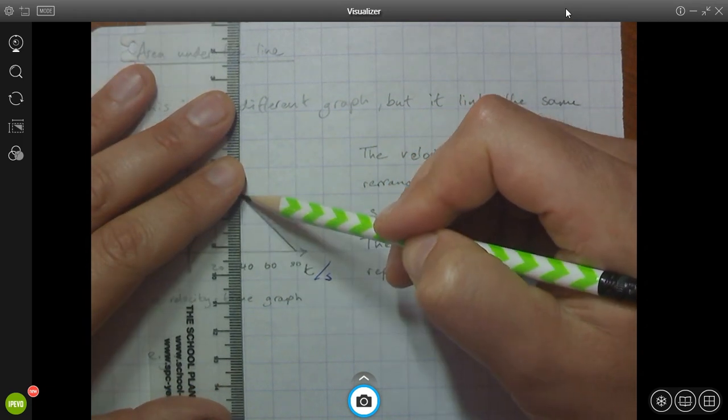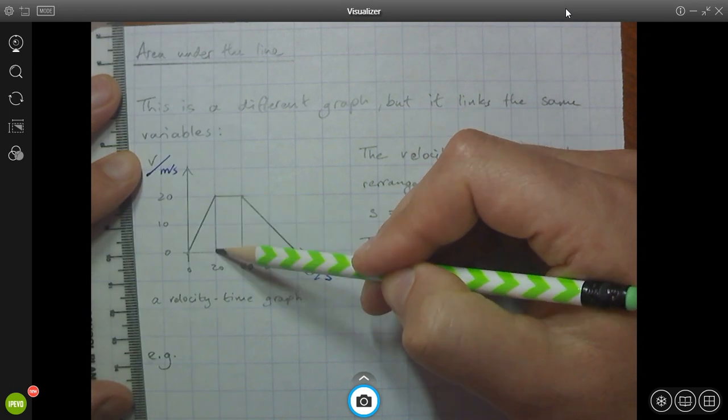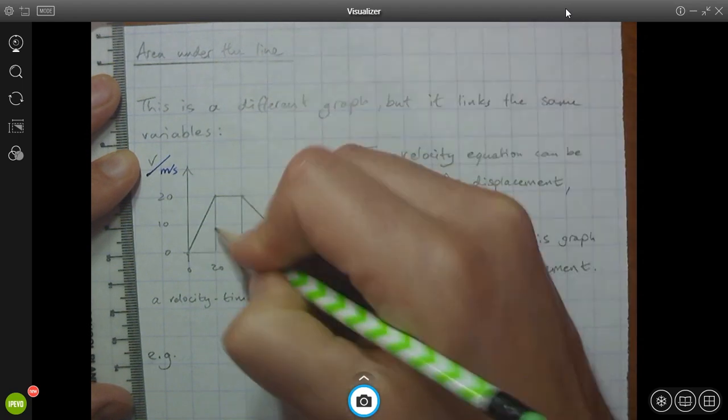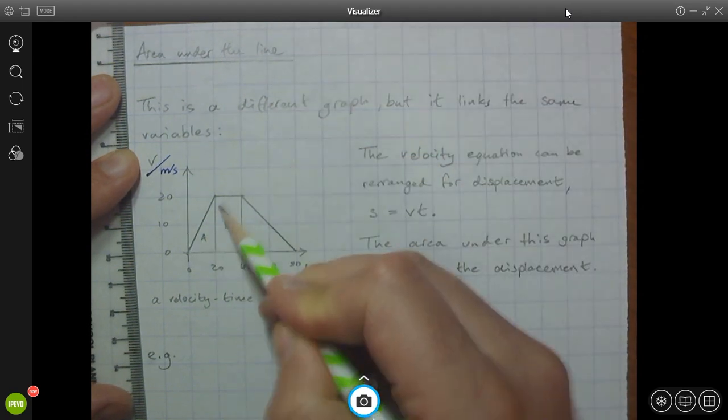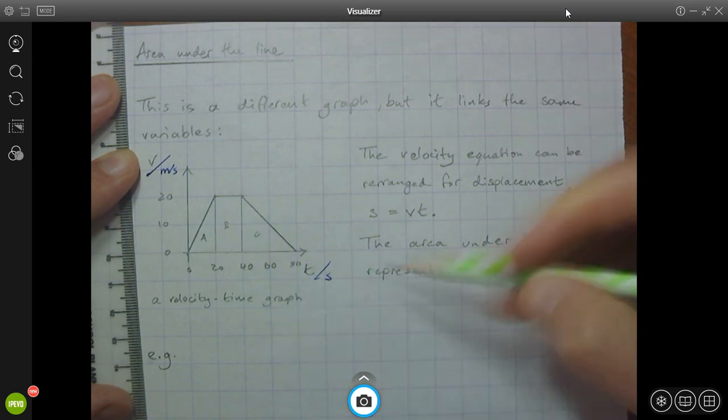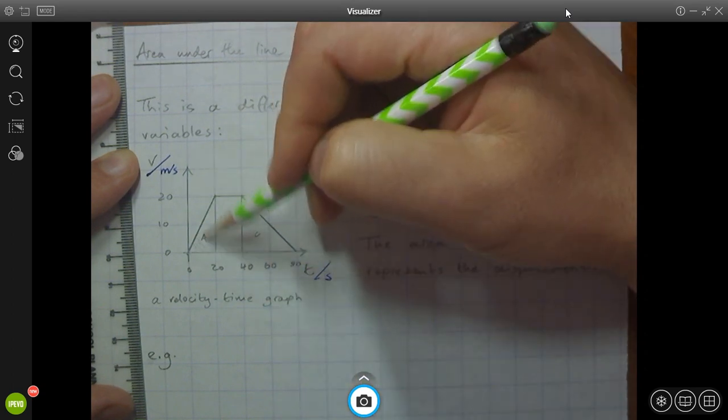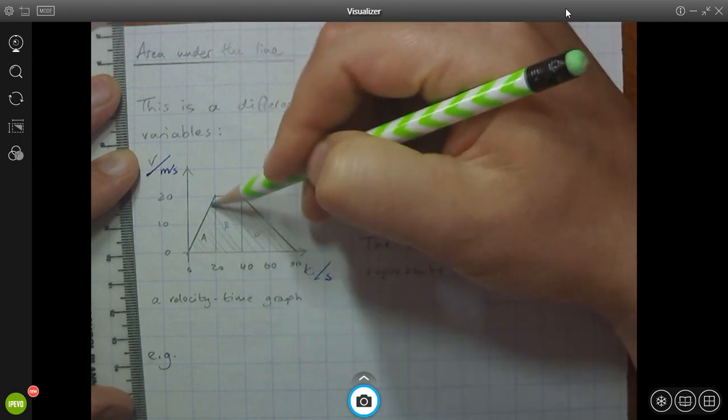So I'm just going to draw some lines here to show you that if you go from the point down to the axis, quite often you'll have something simple. So we've got a triangle here, which is area A, a rectangle here, which is area B, and area C with this other triangle. And we are calculating this whole area here.